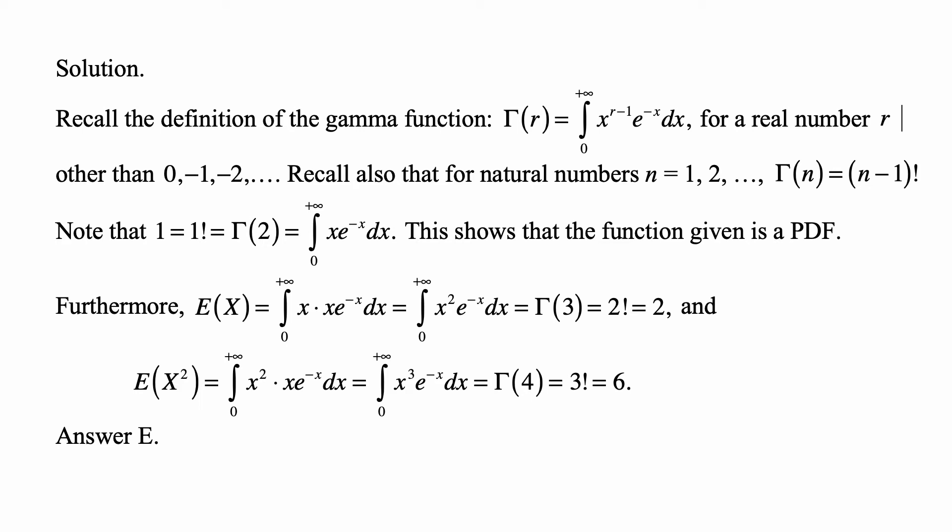And you should know that for natural numbers n equal to 1, 2, and so on, gamma of n is equal to n minus 1 factorial.